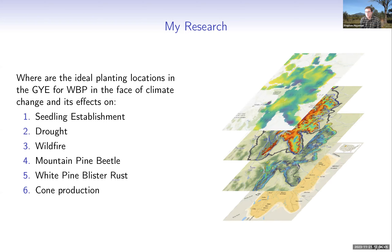Our approach is to create a series of layers describing climate vulnerabilities to whitebark pine at various critical life stages. We hope to overlay these layers and the union of suitable areas will identify climate refugia where whitebark pine is likely to survive and thrive. We have six layers we're incorporating: areas where the climate is conducive for seedling establishment, where it will avoid severe drought and wildfire, where it will minimize mountain pine beetle infestation and white pine blister rust infection, and where the climate drives cone production to identify productive areas for seed orchards that allow Clark's Nutcracker to spread rust-resistant genes.